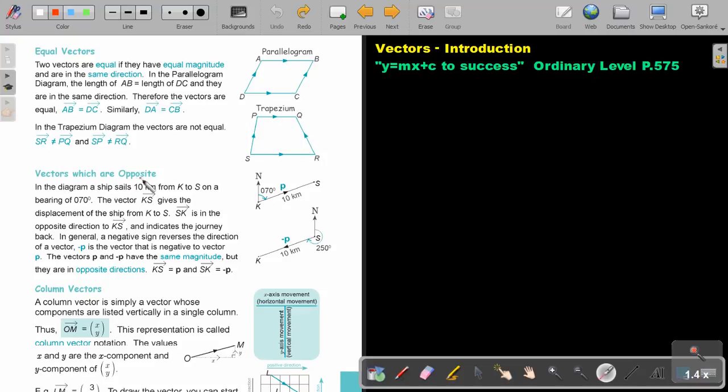So vectors which are opposite, let's just look at this. In the diagram, a ship sails 10 kilometers from K to S, from K to S, on a bearing of 70 degrees. The vector KS gives the displacement of the ship from K to S, from K to S. So SK is in the opposite direction of KS, and indicates that the journey back, in general, a negative sign reversed the direction of a vector. So if this was P, can you see? Then we will say that this is minus P, if it's in this direction.